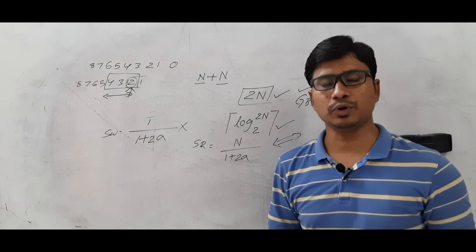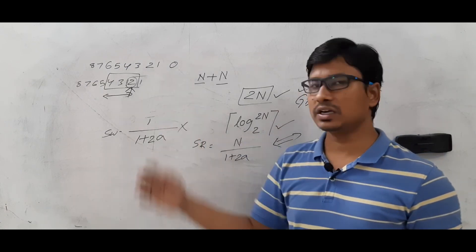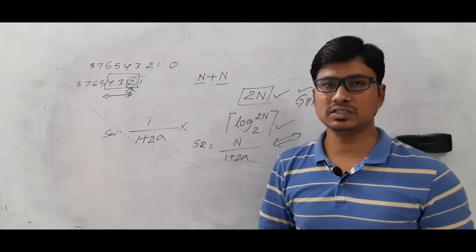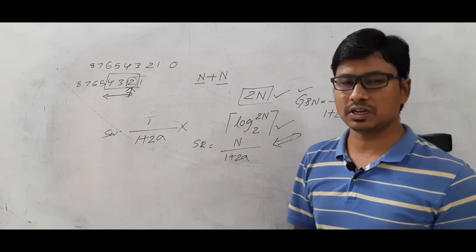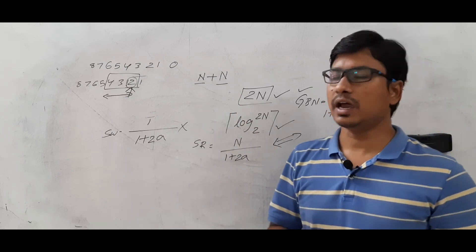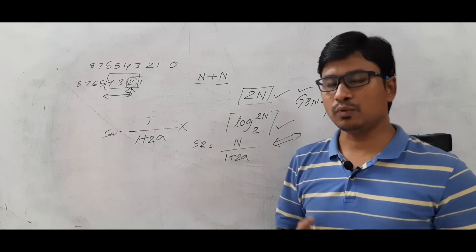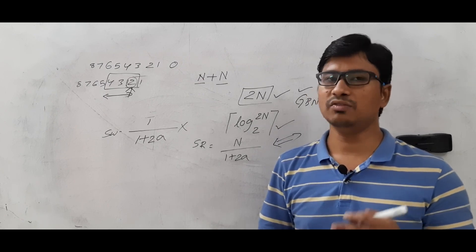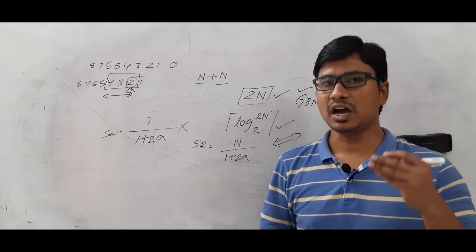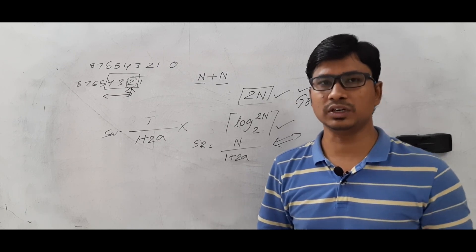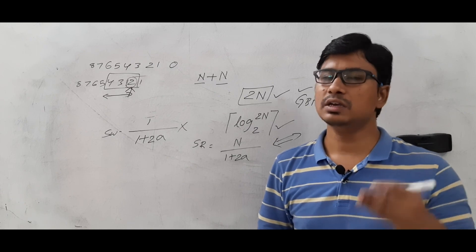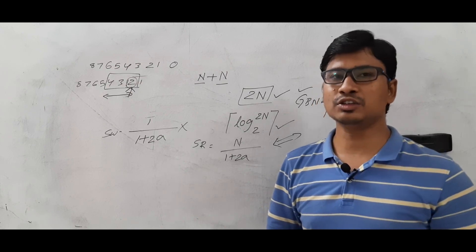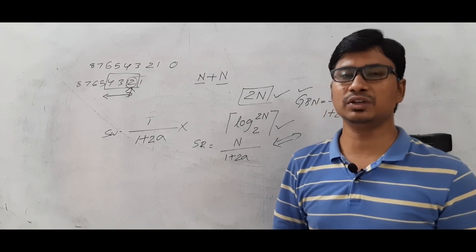I hope you have understood the Selective Repeat protocol — the sender and receiver window sizes, the number of sequence numbers and bits required, the efficiency, and why it is complex. If you still have any doubts, feel free to ask in the comment section and I will try to clear them within 24 hours. If you like my videos, please press the like button, share with your friends, subscribe to my channel, and press the bell button. Thank you for watching, have a nice day.